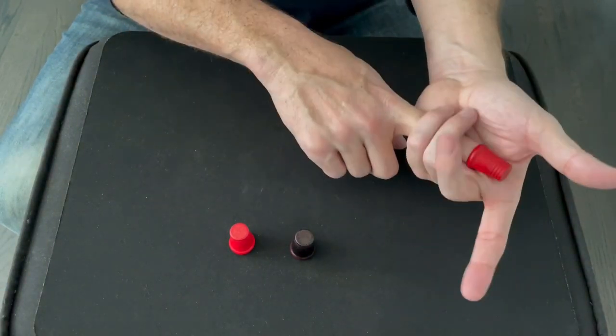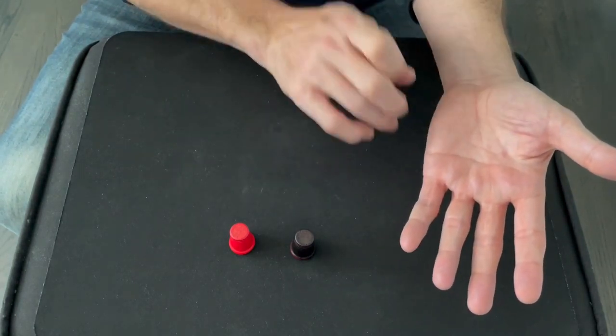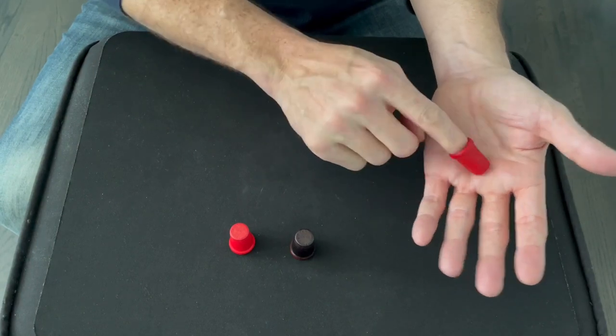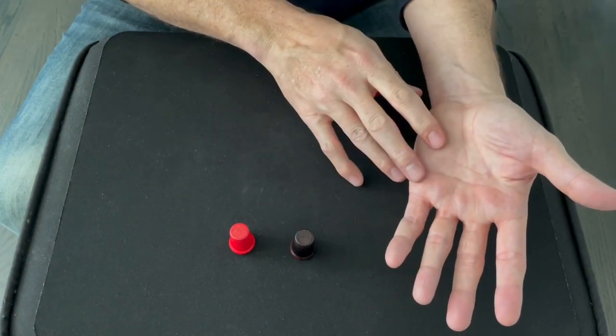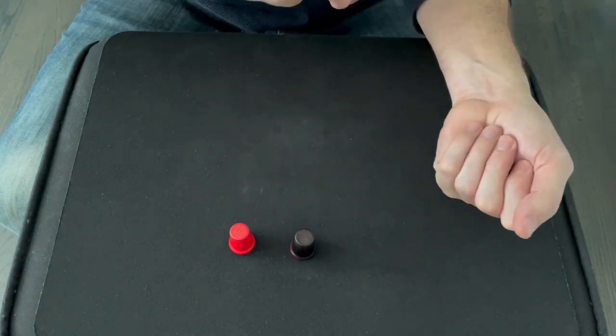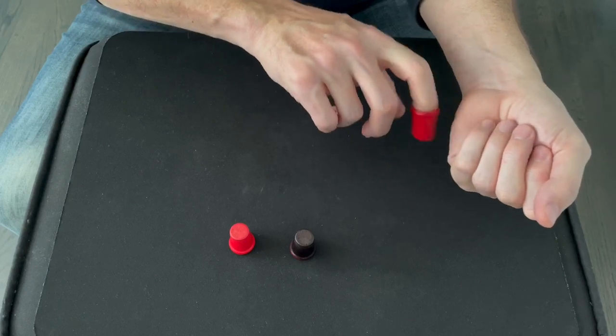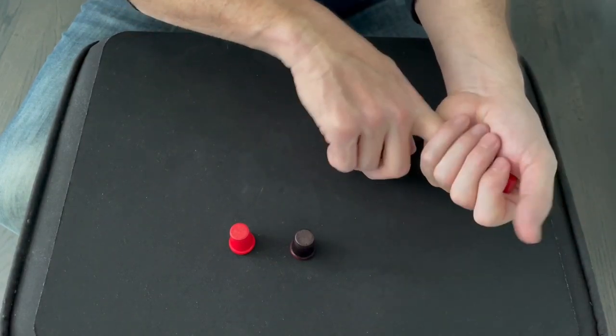Start by practicing this move many times without even closing your fingers. Just putting the thimble on your hand, pulling it out, and palming it. Once you're completely comfortable with this move and you can do it without even thinking about it, then start closing your fingers lightly over your other hand. You want to leave enough room so that you can easily slip your finger out without the thimble getting stuck in your hand.